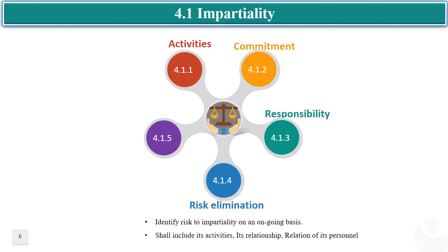As per sub-clause 4.1.4, the laboratory shall proactively identify all potential risks to impartiality on a regular basis. These risks may arise internally from laboratory activities or laboratory personnel, or may arise externally from interested parties or the context in which the laboratory operates. The presence and nature of risks may vary from laboratory to laboratory depending on its operational context. A few examples are: one, business relationships between the laboratory and the client; two, family or personal relationships between people in the laboratory involved in laboratory activities and the client.